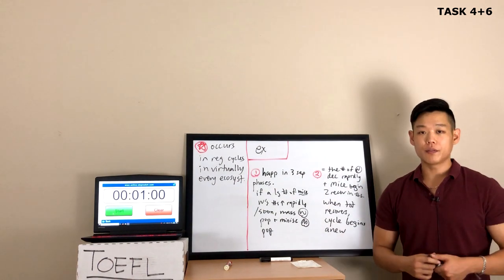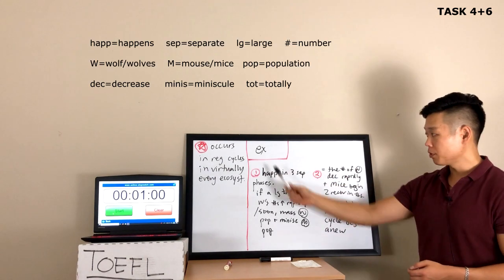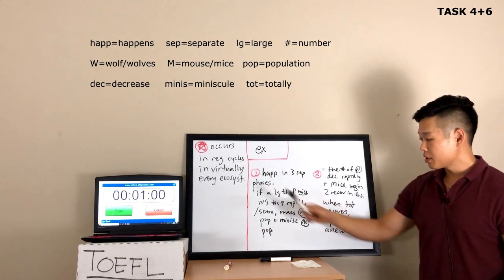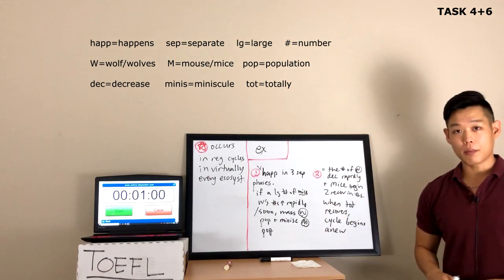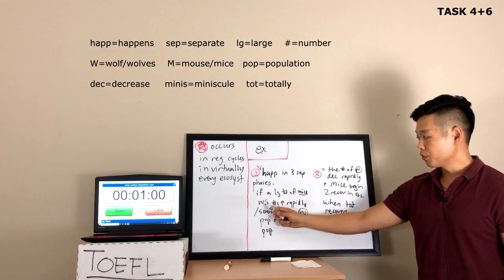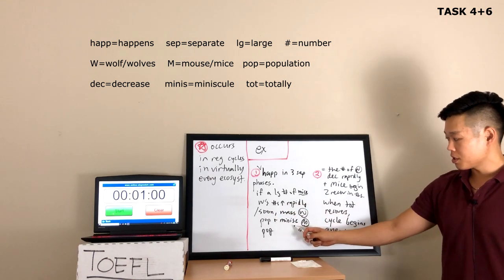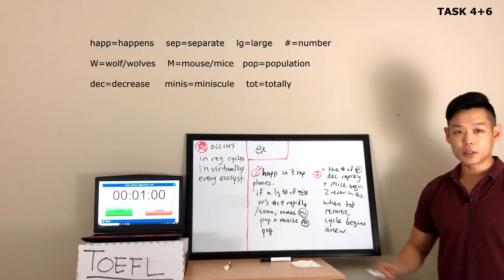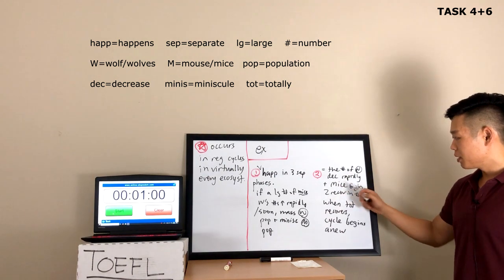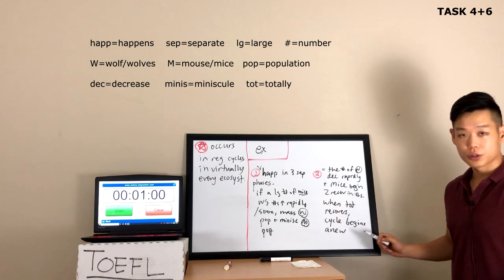The professor said he's going to give us an explanation, but we're going to understand this as one example. Let's look at the whiteboard now. Cyclic population change happens in three separate phases. If there is a large number of mice, the wolf's population will increase rapidly. But soon, there's a massive wolf population and a minuscule mouse population — minuscule means small. So the number of wolves decreases rapidly and mice begin to recover in numbers. When it totally recovers, the cycle begins anew.